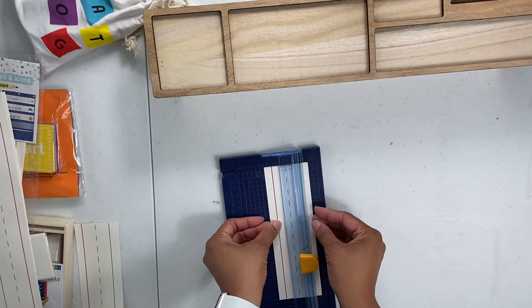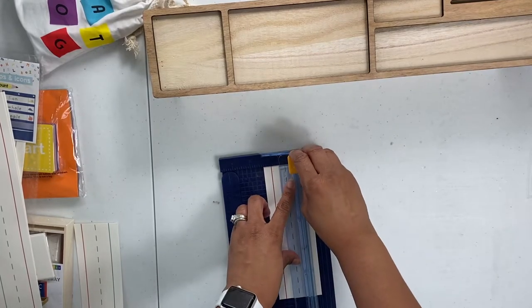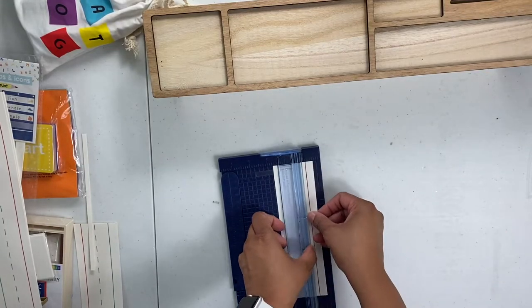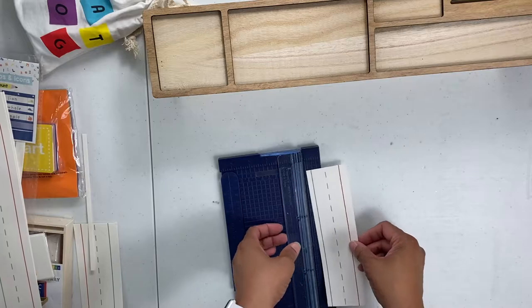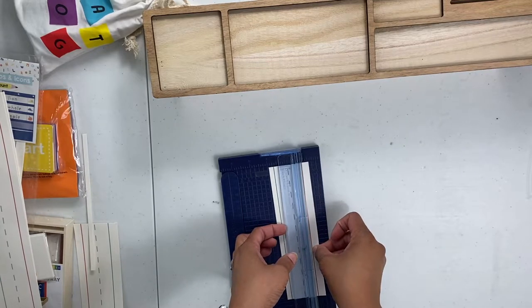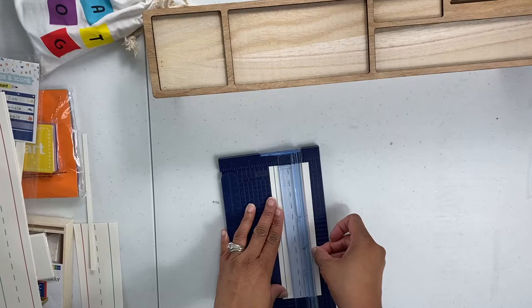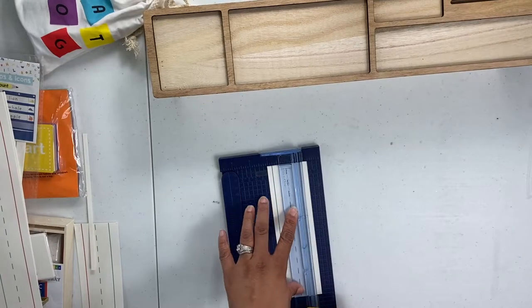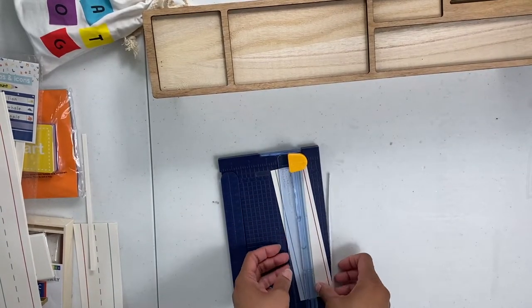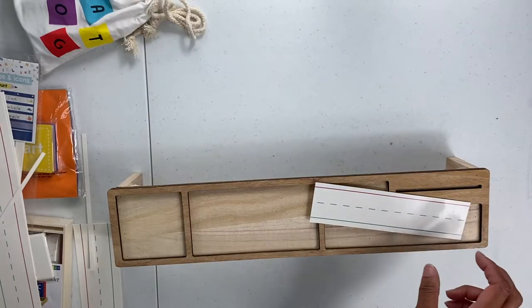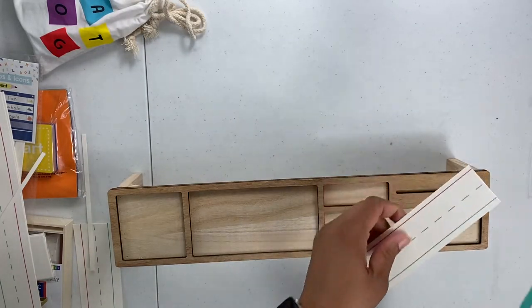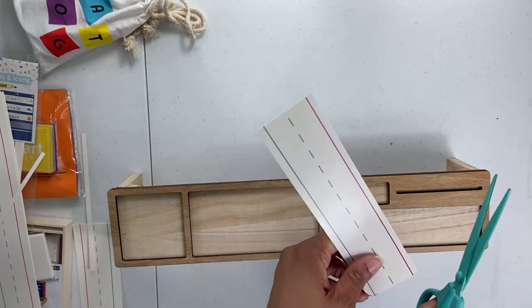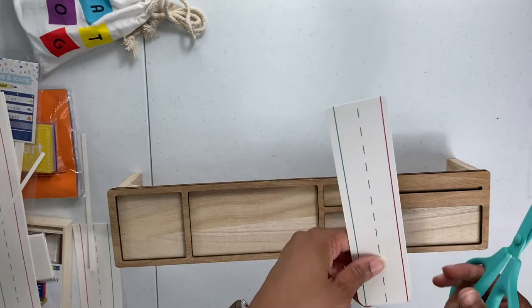And then we are going to go ahead and do this side. Super, super quick and easy. Let's do it that way so I can see what I'm doing. Line it up. And let's see if our measurements work. Don't have my little rounder cutter so we're just going to do just like that. That's not round. But you get the idea, right?